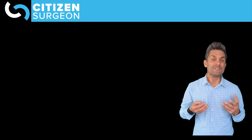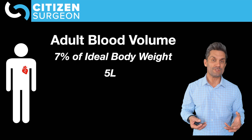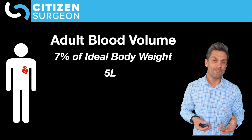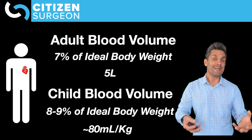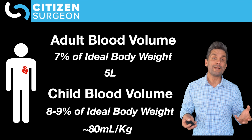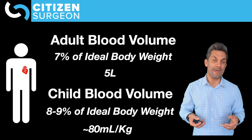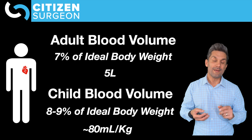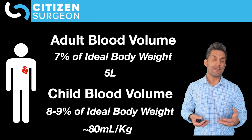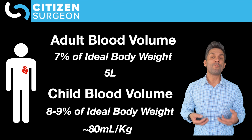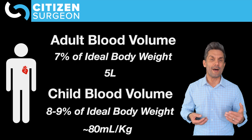In the adult human body, blood volume is about 7% of body weight, or roughly five liters. In children, blood volume is about 80 milliliters per kilogram — so a one-kilo baby has only 80 milliliters of blood, about a third of a can of soda. In patients with obesity, blood volume is calculated based on ideal body weight, with about 7% of ideal body weight as the blood volume.